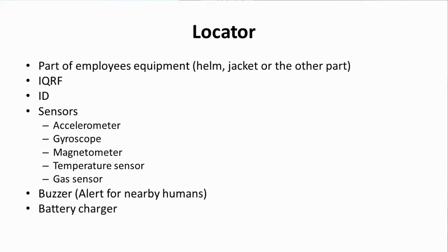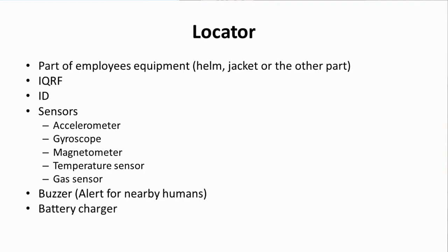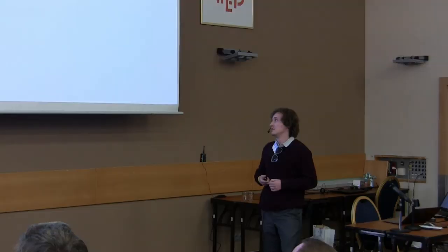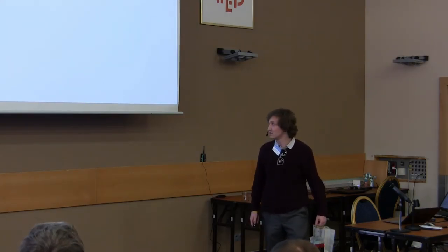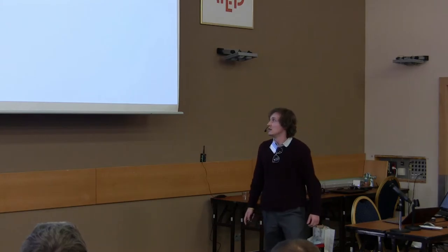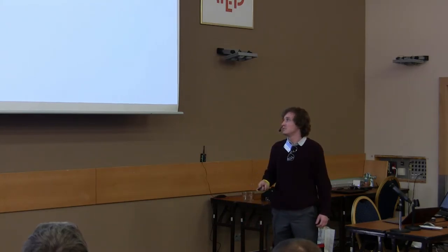For example, accelerometer, gyroscope, magnetometer, temperature sensor, and gas sensor. The next part of the locator is buzzer, which can notify nearby humans when some employee is injured. The locator contains battery charger.